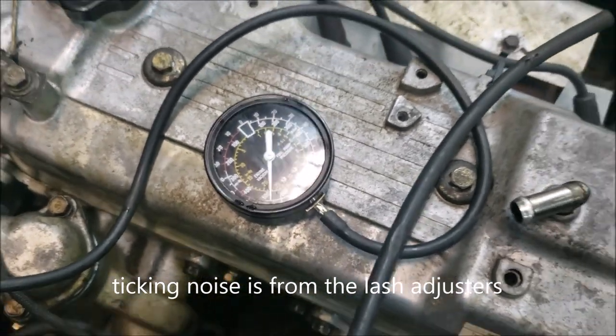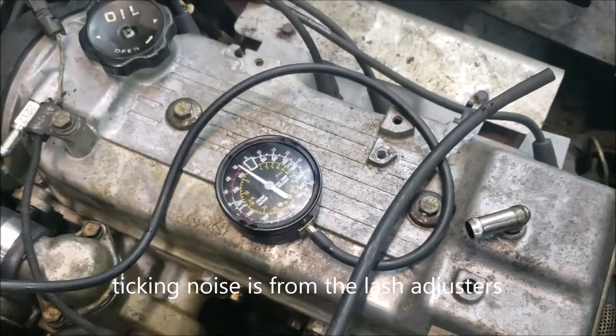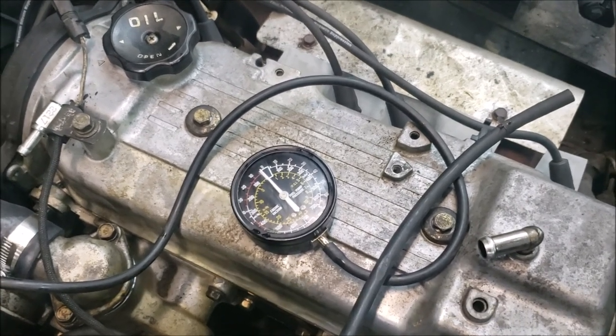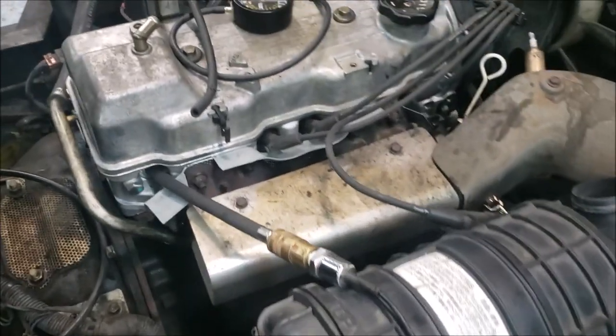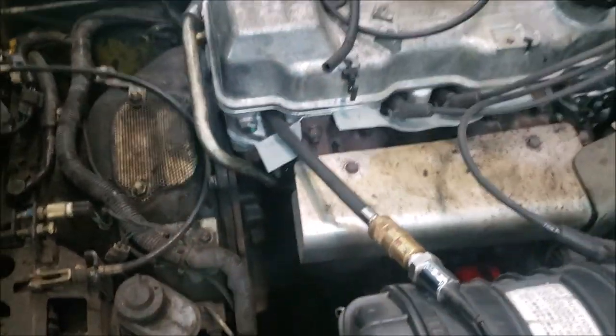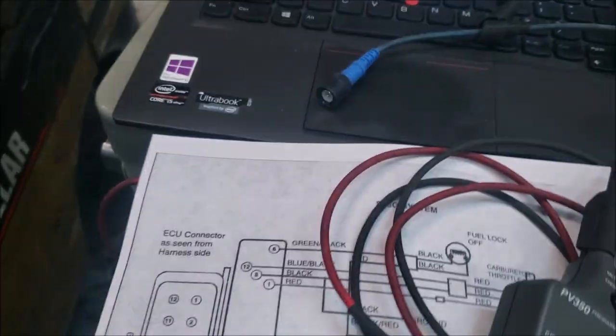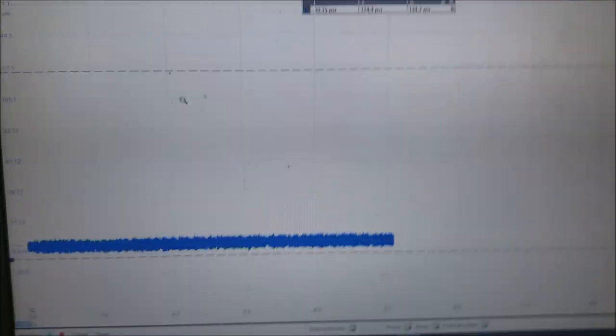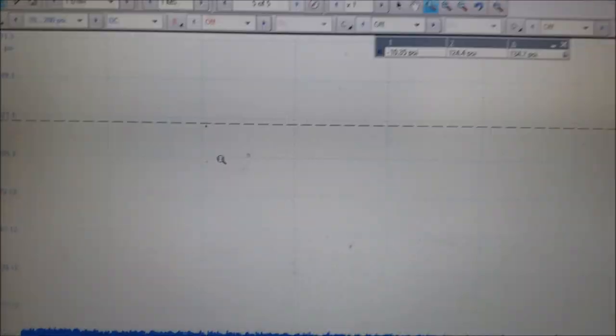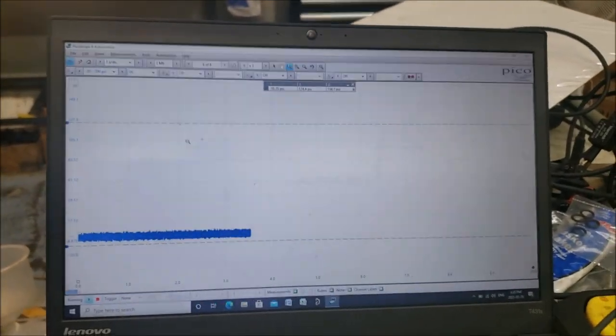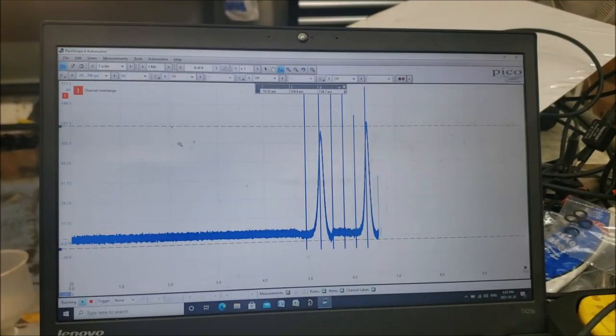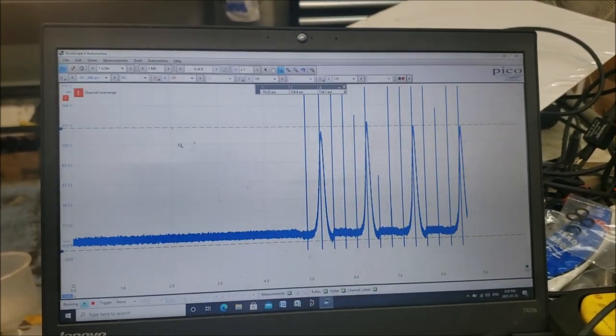All right, so next thing I'm going to do, we're going to try to put the in-cylinder compression tester again and see what we get. Okay, same setup as earlier - in cylinder number four, my pressure transducer. Channel A, zero to 200 psi. Let's crank it and see if there's any change to the waveform that we get.